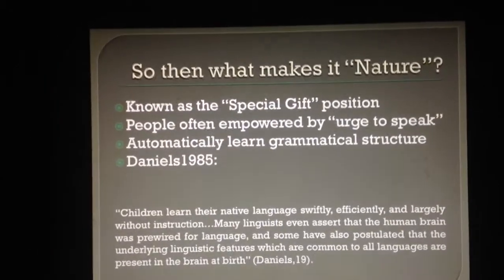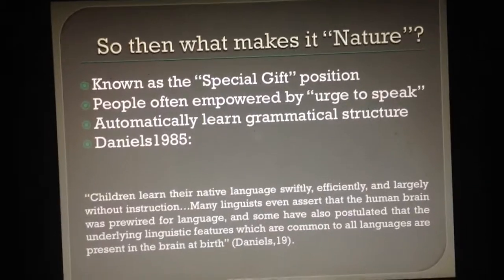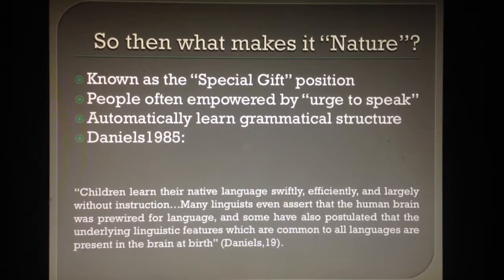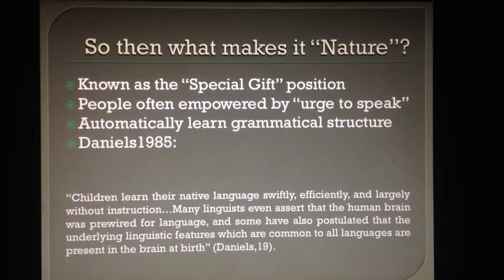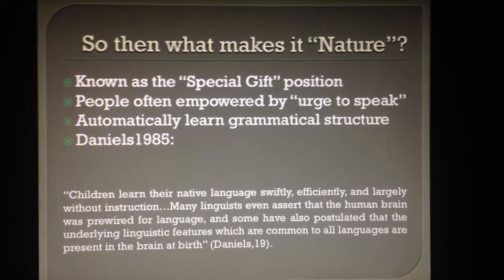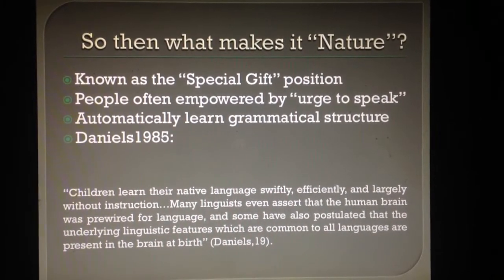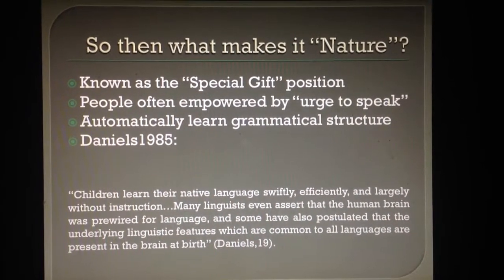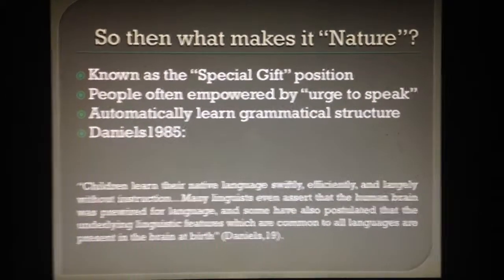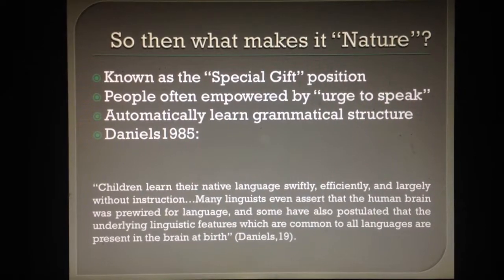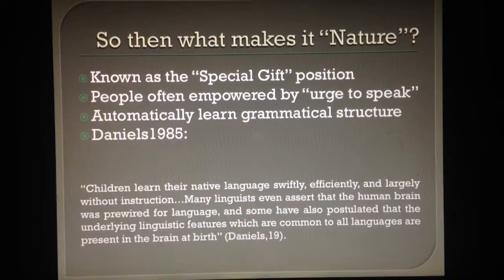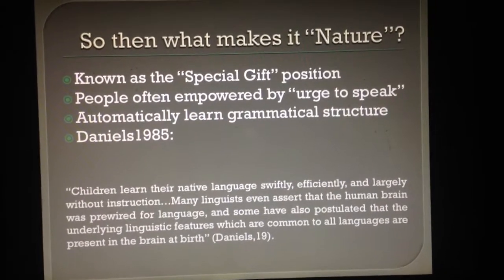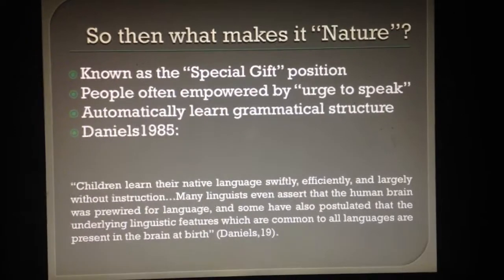Now that we have established that language acquisition is in fact an aspect of nurture, what makes it a nature trait? Although it is easy to attribute language acquisition to nurture, there are arguments that make it very difficult to deny nature's involvement as well. This theory is also known as the special gift position and was founded by linguistic revolutionary Noam Chomsky. He implores that people pay more attention to the nature aspect and provides many reasons as to why. Firstly, people are empowered by the urge to speak. This is exemplified when children make sounds and try to communicate when they interact with others before they can officially speak. Another reason is because children automatically learn grammatical structure without ever being taught — for example, studies show how children learn to ask questions and change the order of the subject and verb before ever officially being told to do so.